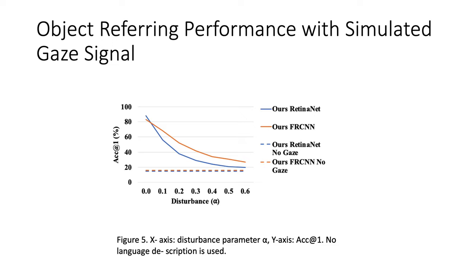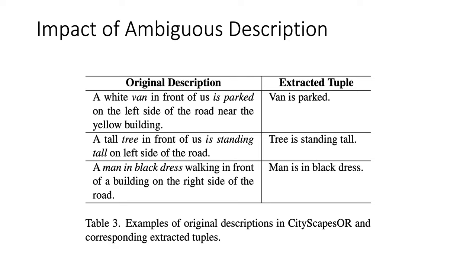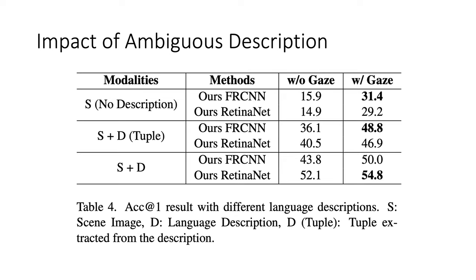Also, the performance drops drastically once the gaze estimation is unreliable. As expected, since RetinaNet generates dense anchors, it suffers more once the gaze prediction is unreliable. In the Cityscapes-OR dataset, the language description is designed to be informative and unambiguous for the observers, but it may not be the case in the real world. To show how gaze information works with ambiguous descriptions, we use the SOIE package to extract relation tuples from the original detailed description. The experimental result is shown in the table. We observe two things: the less ambiguous the language, the better the object referring performance; and the more ambiguous the language, the more gaze information helps.